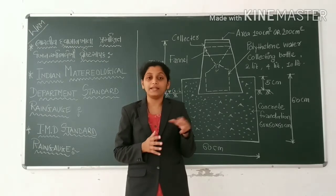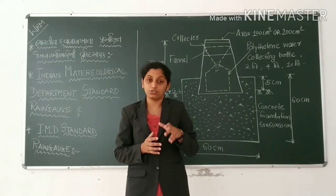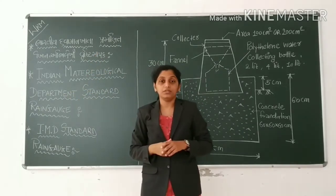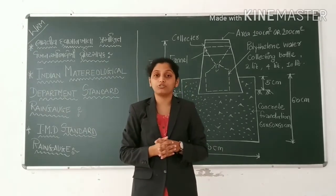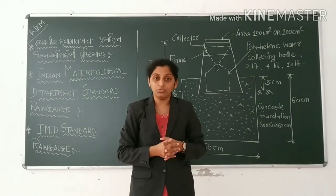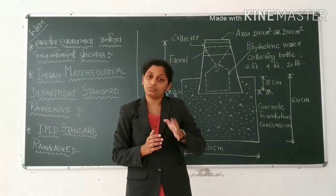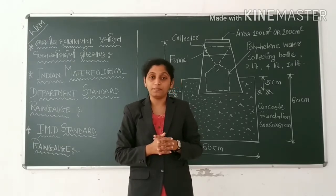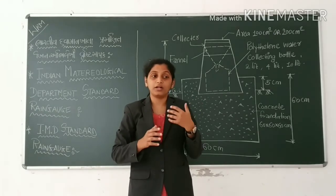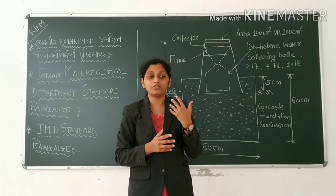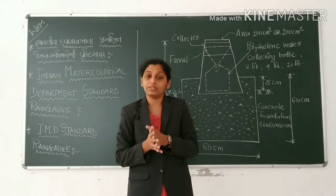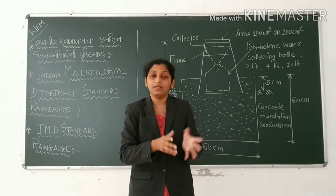In 1969, the Indian Meteorological Department standard rain gauge was adopted for the measurement of rainfall. Before 1969, we used Symons rain gauge, but after 1969, Symons rain gauge had a little modification due to the limitations of Symons rain gauge.